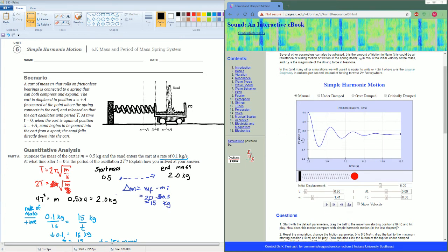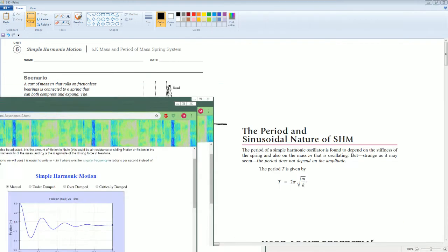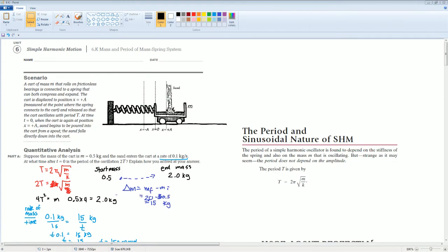Energy is essentially being lost for the system because a simple harmonic motion—originally without the sand—this would have just moved like a simple harmonic motion.